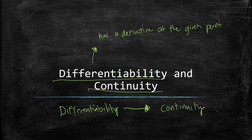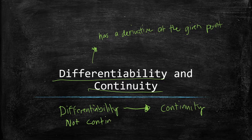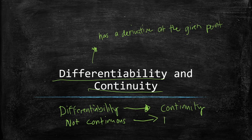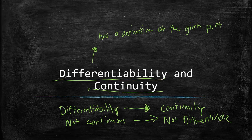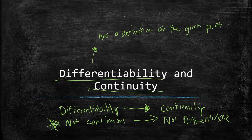We can also state the contrapositive: if a function is not continuous, then it is not differentiable. We can use this statement to determine if a function is not differentiable. The only rule is: if it's not continuous, it is automatically not differentiable.